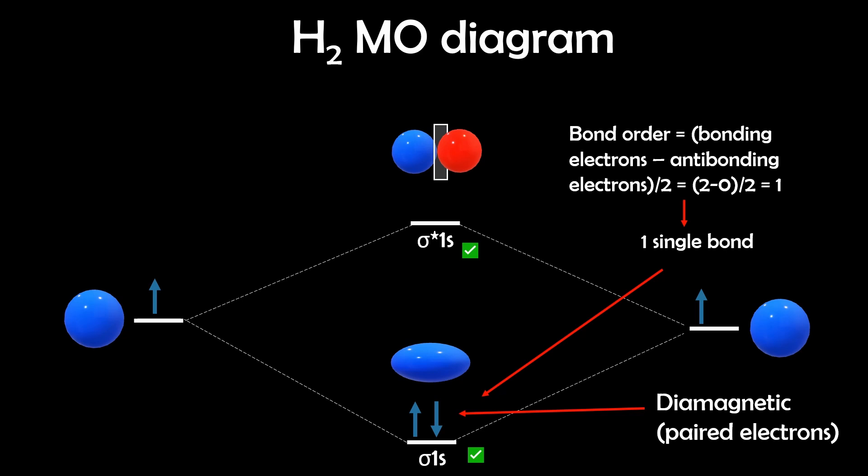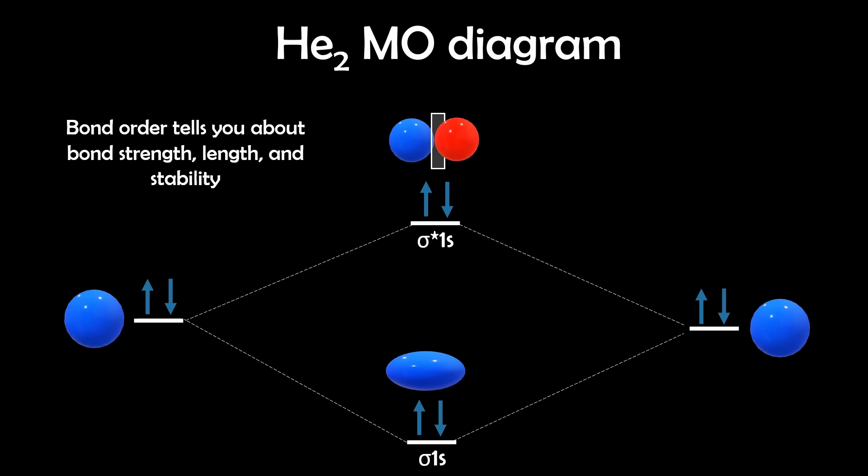But also we can predict the bond order, which is the bonding electrons minus the antibonding electrons divided by two. So in this case, we have two bonding electrons minus zero antibonding electrons, which gives us one, meaning we have a single bond. And bond order actually gives us insights into the bond strength, length, and stability. And it explains why some molecules like helium-2 don't exist. And this is because in helium-2, the number of bonding and antibonding electrons is equal. So the bond order is zero, and there's no net attraction, no stable molecule.